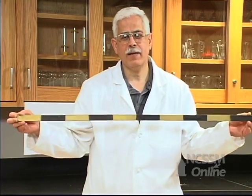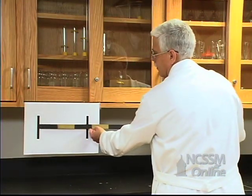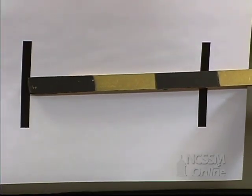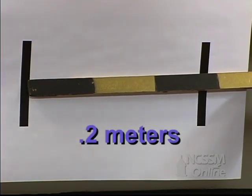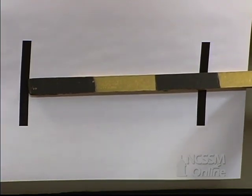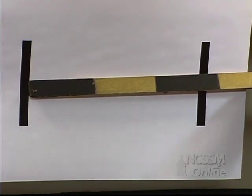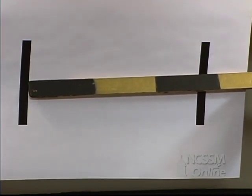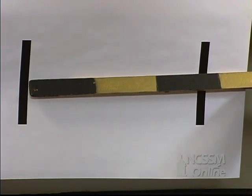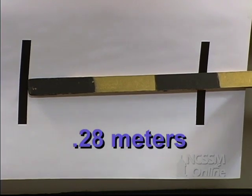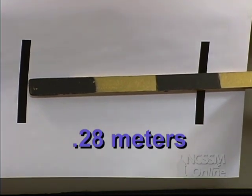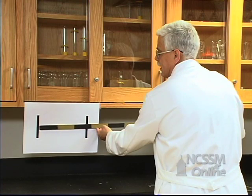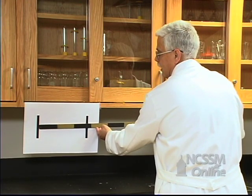If we measure our same distance, we find that we know with certainty that we are at least 0.2 meters and not up to 0.3 meters. So we're somewhere between 0.2 and 0.3 meters. We can estimate the second digit and say that we have 0.28 meters. The 0.2 we know with certainty. The 0.08 is estimated. We have a total of two significant figures, one certain and one estimated.